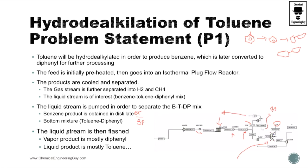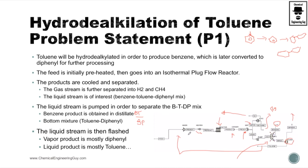We also want to remove the diphenyl and toluene, so we are going to use a flash system. Diphenyl will go as a vapor and toluene will go as a liquid. The toluene can be used in a recycle stream because it is one of our raw materials, and diphenyl is our final product.